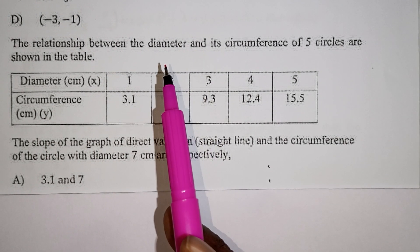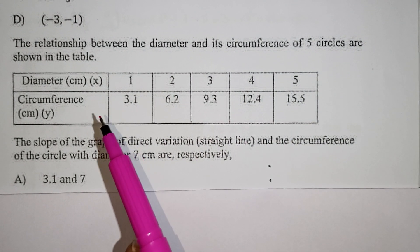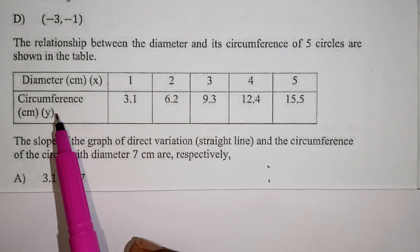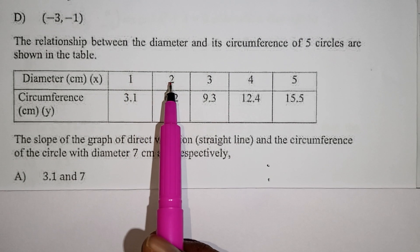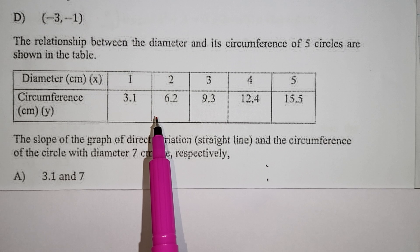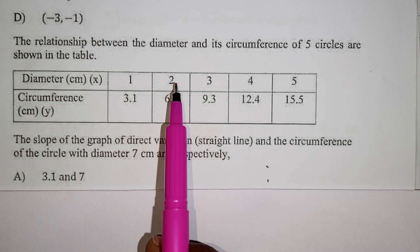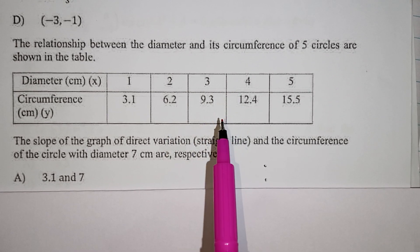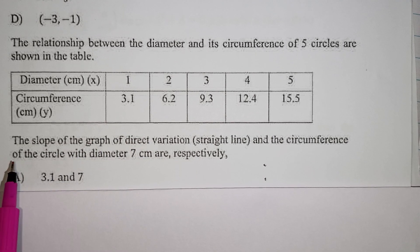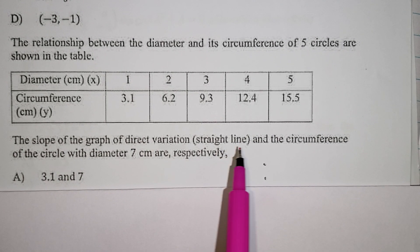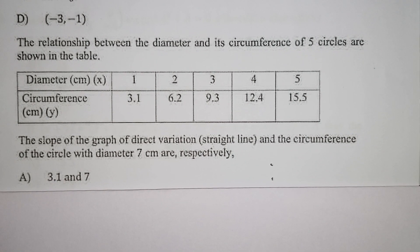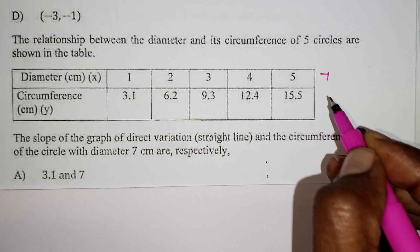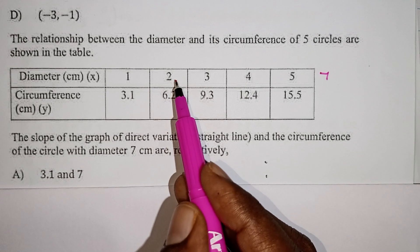The relation between the diameter and circumference of 5 circles is shown in a table. Diameter 1, circumference 3.1; diameter 2, circumference 6.2. The pattern shows circumference equals diameter multiplied by 3.1 (approximately pi). For diameter 7, circumference equals 7 times 3.1 equals 21.7.